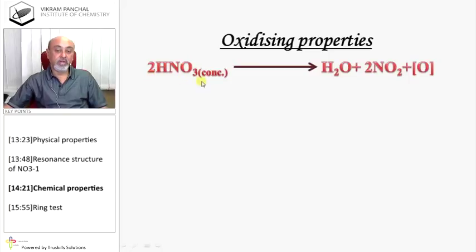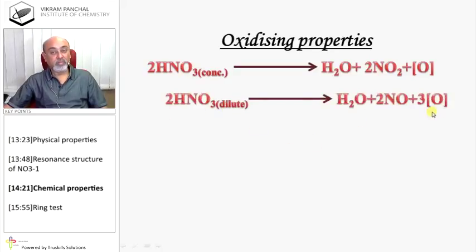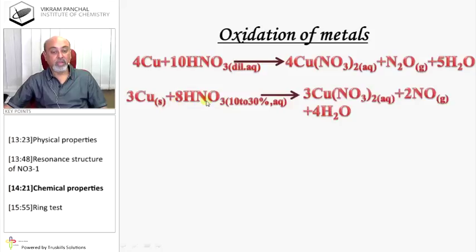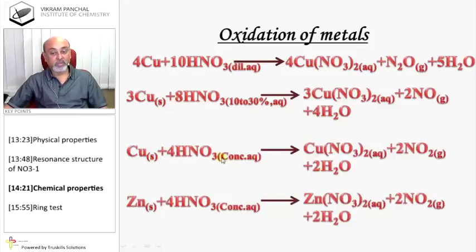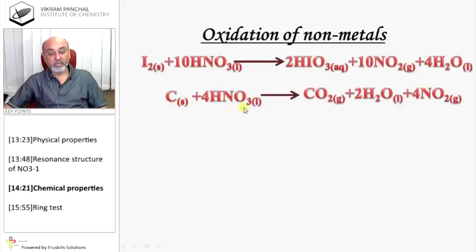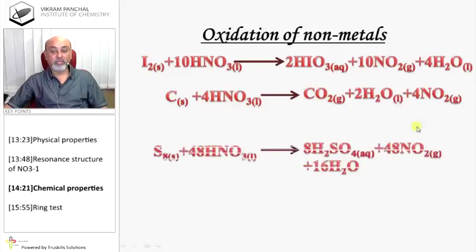Oxidizing property: Concentrated nitric acid decomposes to give NO2 and release oxygen. Dilute HNO3 releases 3 moles of oxygen. Oxidation of metals: Copper reacts with dilute HNO3 and gives copper nitrate plus N2O. Copper reacts with 10 to 30% HNO3 and gives copper nitrate plus NO. Copper reacts with concentrated HNO3 and gives copper nitrate plus NO2 gas. Zinc reacts with concentrated HNO3 and gives zinc nitrate and NO2 gas. Oxidation of non-metals: Iodine reacts with HNO3 and gives iodic acid plus NO2. Carbon reacts with HNO3 and gives CO2 plus NO2. Sulfur reacts with HNO3 and gives sulfuric acid and NO2. Phosphorus reacts with HNO3 and gives phosphoric acid and NO2.